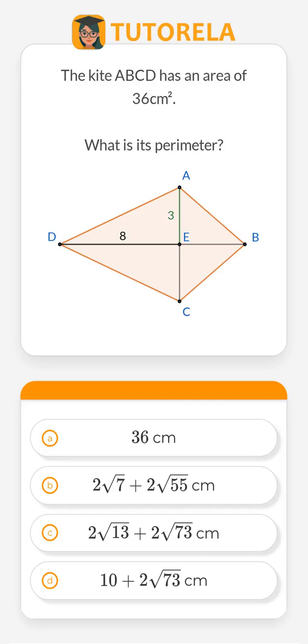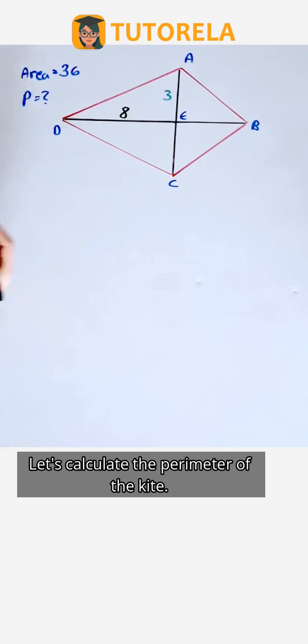The kite ABCD has an area of 36 square centimeters. What is its perimeter? Let's calculate the perimeter of the kite.